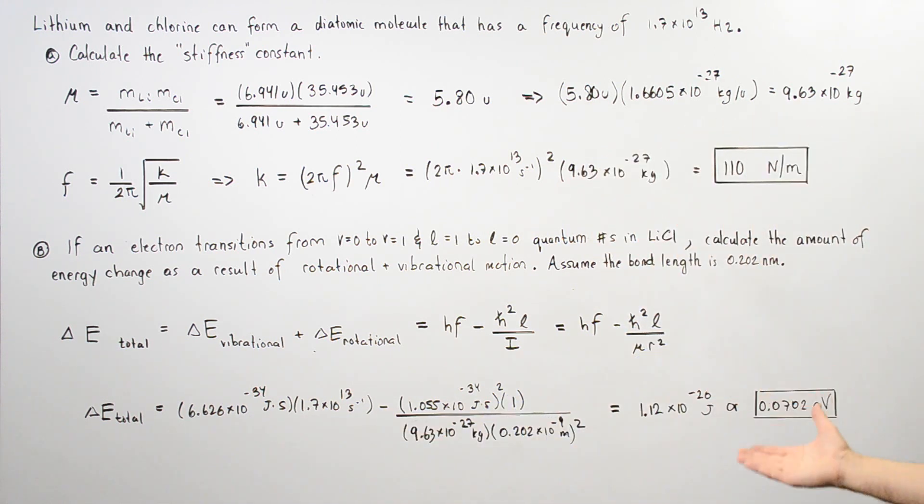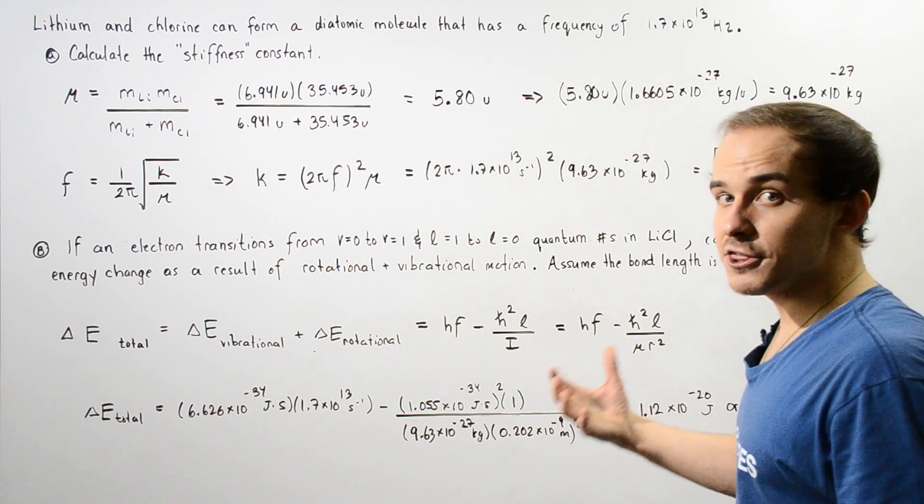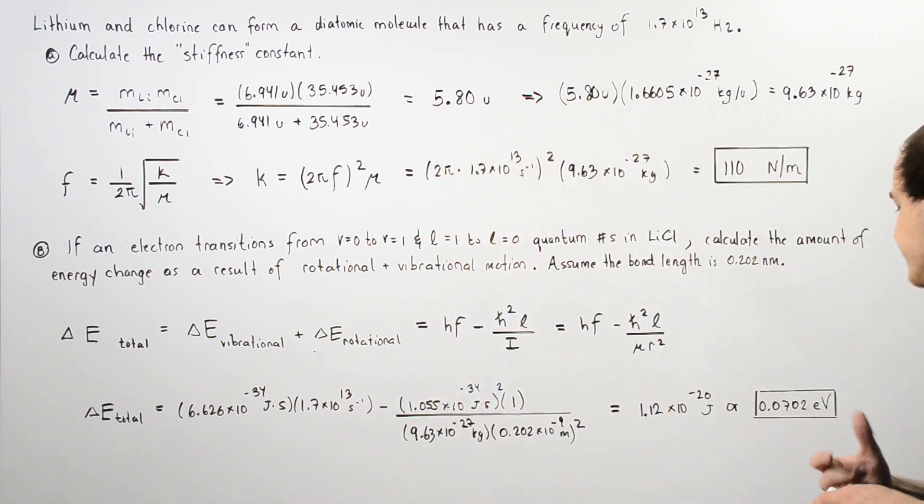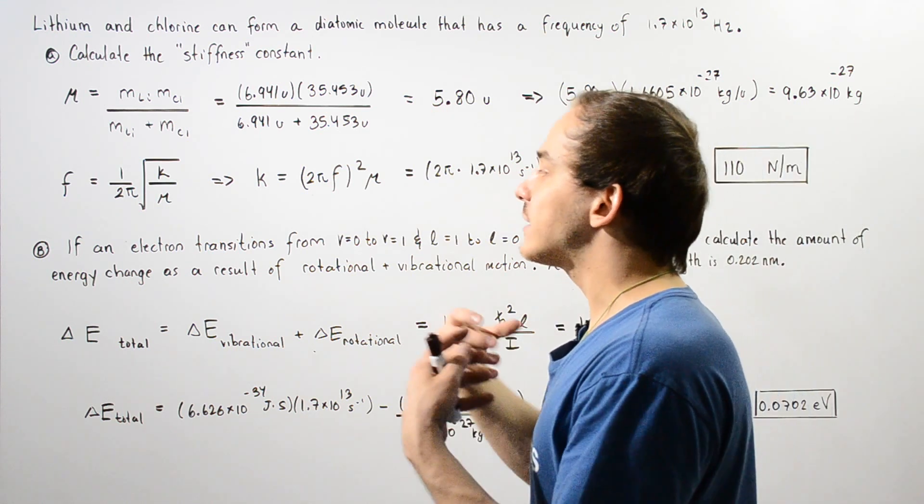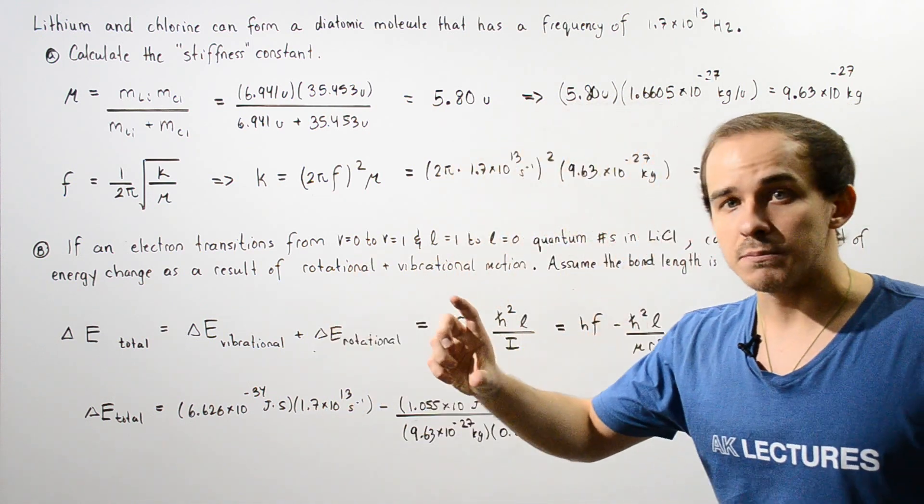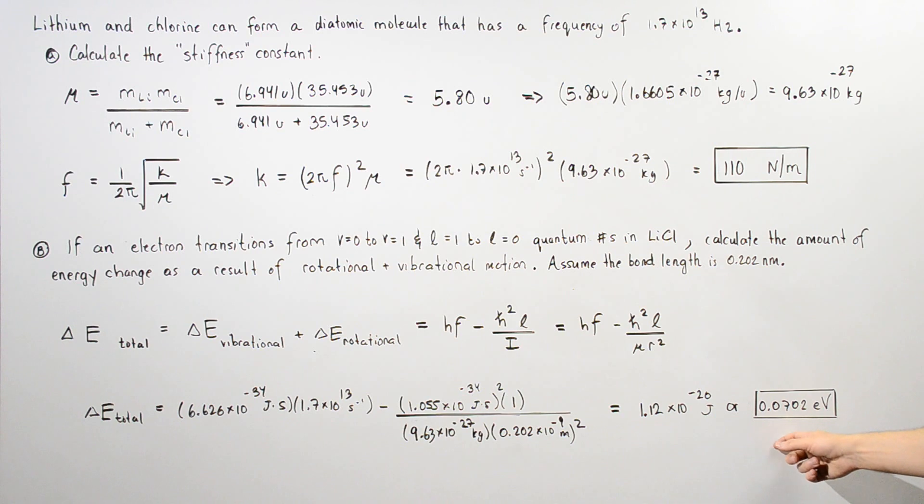1.12 times 10 to the negative 20 joules. If we take this and divide that by 1.6 times 10 to the negative 19, we get the energy in electron volts: 0.0702 electron volts. This is the energy that changes and causes that electron transition. The electron absorbs this quantity of energy and basically jumps between these two quantum states.